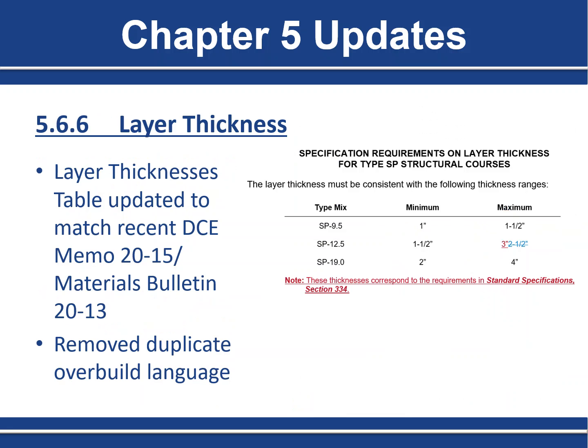The next set of changes are in Section 5.6.6, Layer Thickness. Earlier this year, a joint bulletin released by the Construction Office and the Materials Office announced a new maximum allowable layer thickness of 3 inches for SP 12.5 mix. This change was already made to the standard specifications, so this update to the flexible manual is just to incorporate that change in our routine update cycle.